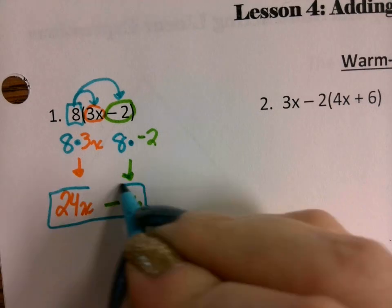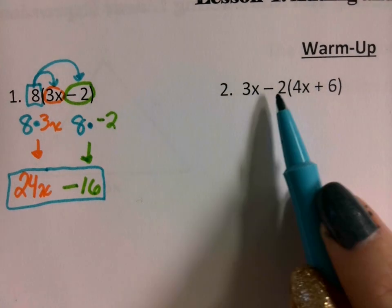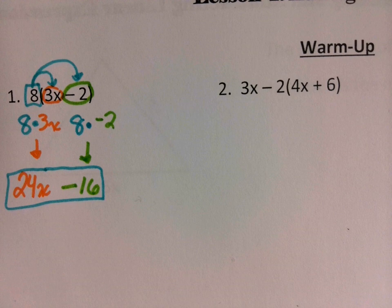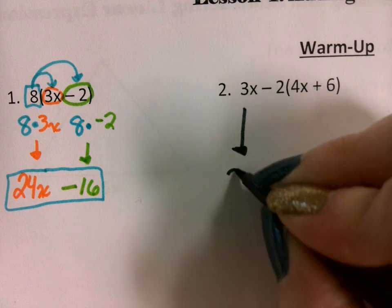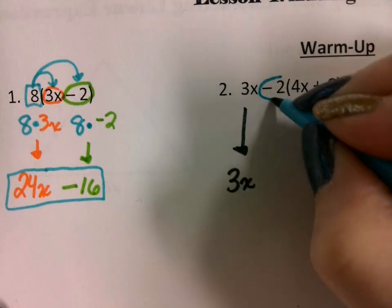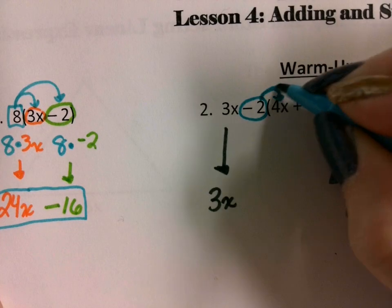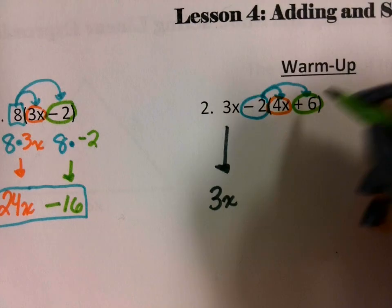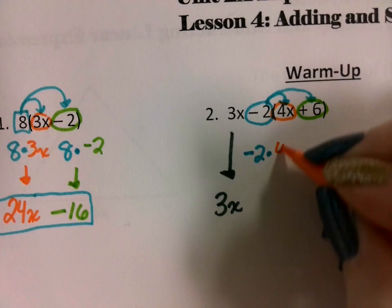24x minus 16. For problem number 2, we have 3x minus, and then we've got a distributive property, so we're going to distribute first. This 3x is just going to come straight down in our problem. We're going to distribute a negative 2 — that minus 2 acts like a negative sign. So we're going to do negative 2 times 4x, which comes out to negative 8x.